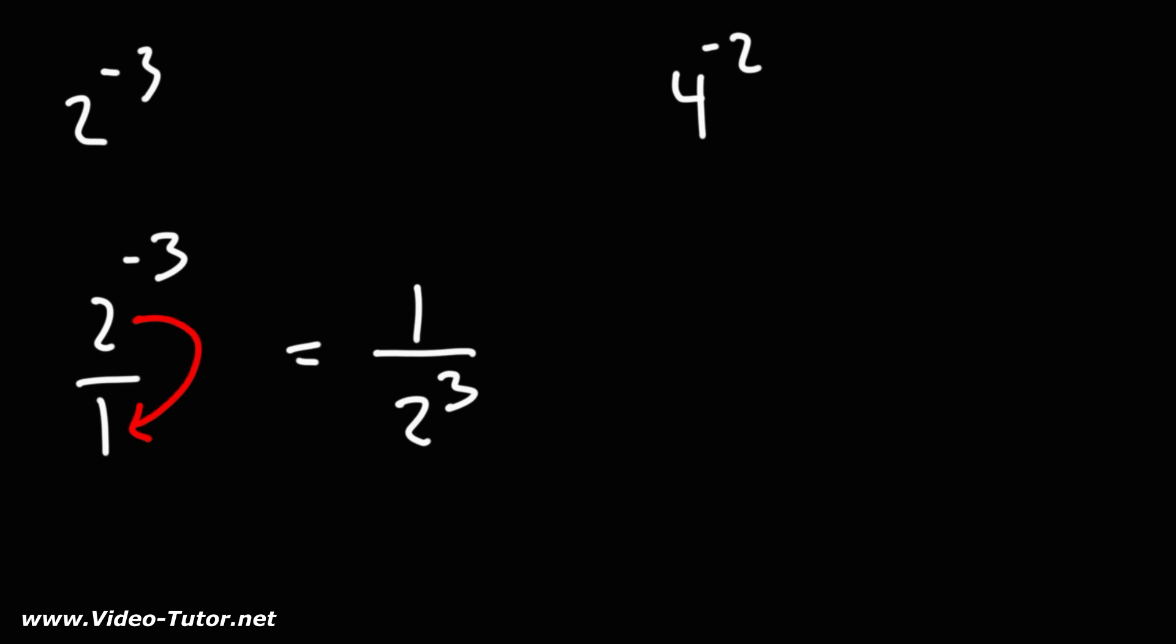So that's how you can convert a negative exponent to a positive exponent. You simply flip the fraction or move the base to the other side of the fraction.